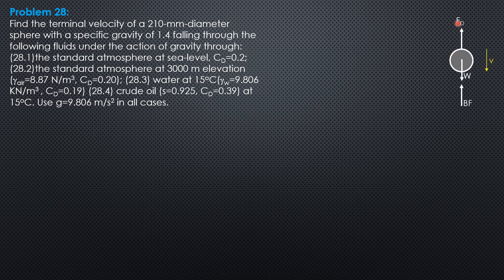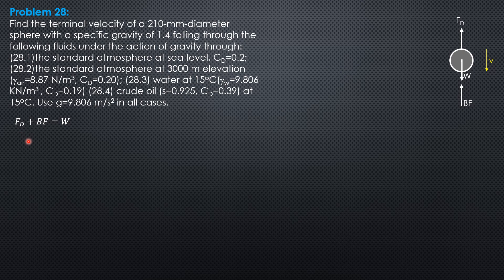This is the free body diagram when the sphere attains its terminal velocity, where the terminal velocity will be constant because it accelerates first until all forces are balanced. From the figure, drag force plus buoyant force equals weight. The drag force is the coefficient of drag times density times projected area times velocity squared over 2.